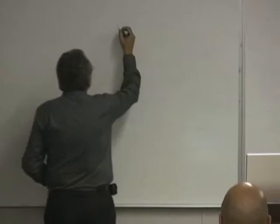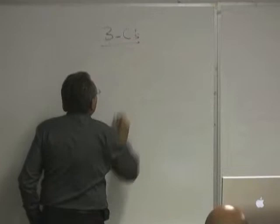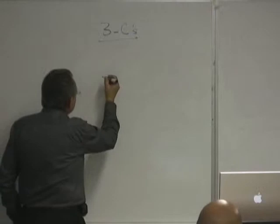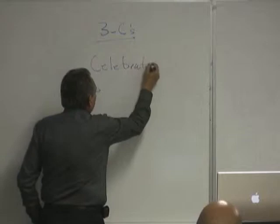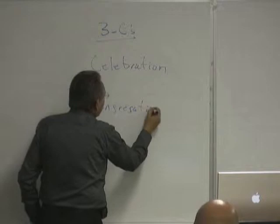When we think about churches, one way to think of them is what's called the three C's, and I've found this helpful, particularly when you're thinking about small group development. The three C's are celebration, congregation, and cell.